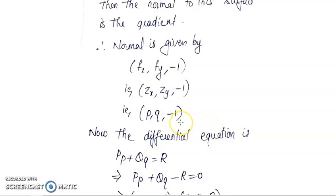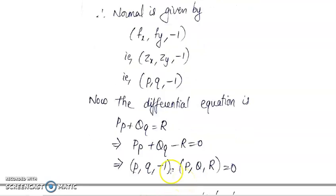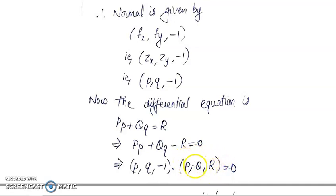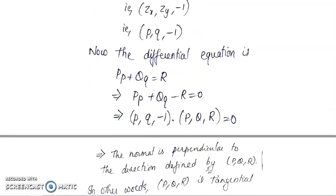Since (p, q, -1) satisfies this equation, from the PDE you have Pp plus Qq equal to R. You can see that you have the coefficients p, q, and minus 1. When I take the dot product of these two vectors (p, q, -1) and (P, Q, R), that dot product is equal to 0. So that means these two vectors are perpendicular to each other. Since (p, q, -1) is the normal to my surface, (P, Q, R) must denote the tangential direction to the surface.